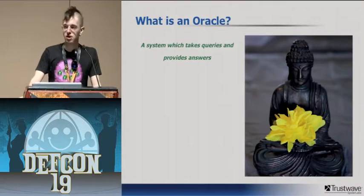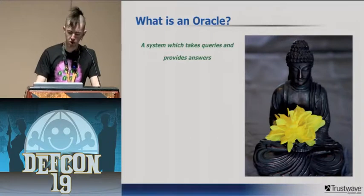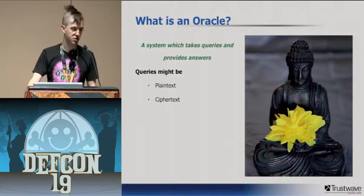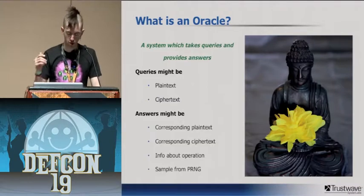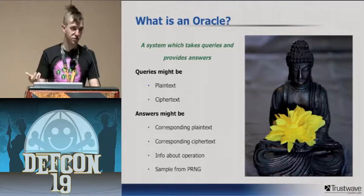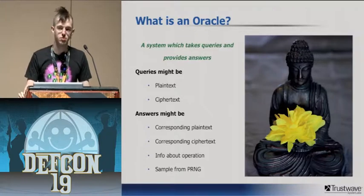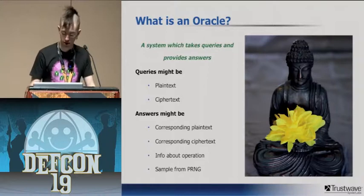An oracle is any system that takes in user input, processes it, and gives output. When talking about cryptography, we mean taking in plaintext or ciphertext and then encrypting or decrypting while leaking something about that operation — whether that's the corresponding plaintext to an input ciphertext, the ciphertext to an input plaintext, info about success or failure, or a sample from a pseudo-random number generator, which is called a random oracle.